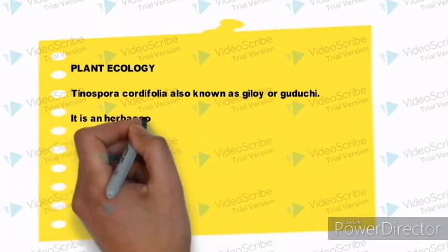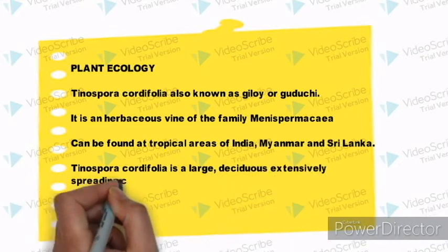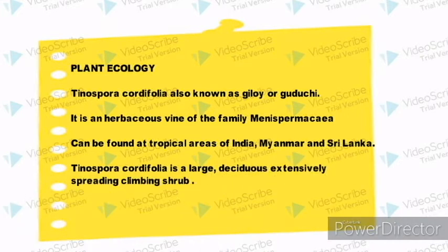Plant ecology. Tinospora cordifolia, also known as Giloy or Guduchi, is an herbaceous vine of the family Menispermacea. It can be found in tropical areas of India, Myanmar, and Sri Lanka.